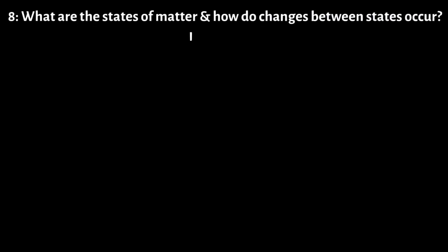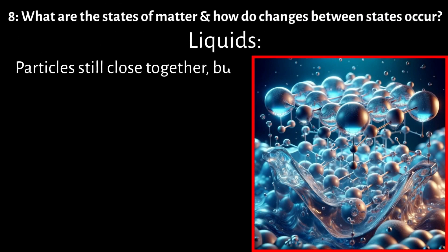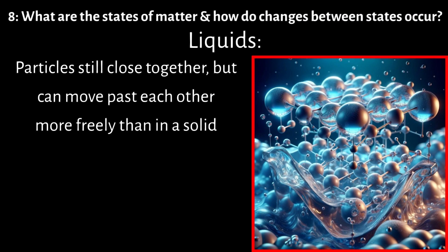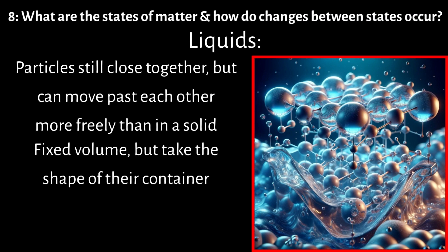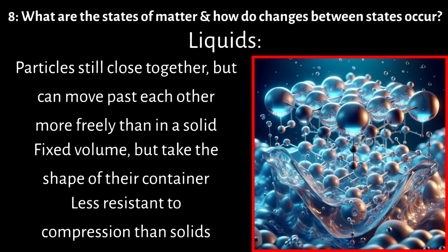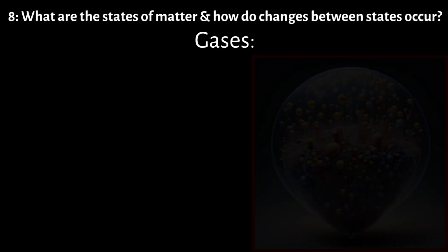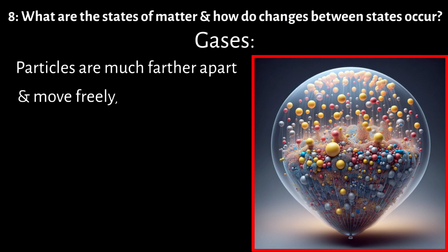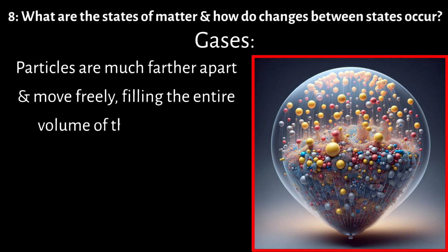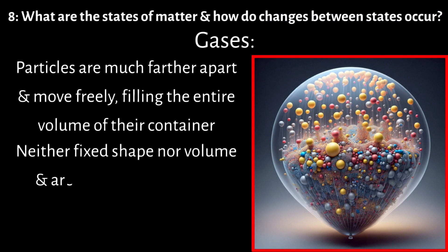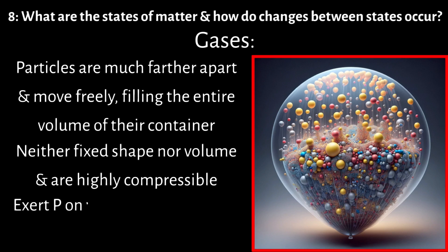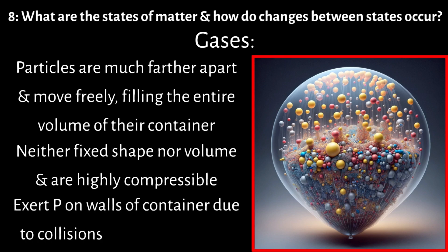In a liquid, particles are still close together but can move past each other more freely than in a solid. Liquids have a fixed volume but take the shape of their container. They flow and are less resistant to compression than solids. In a gas, particles are much farther apart and move freely, filling the entire volume of their container. Gases have neither fixed shape nor volume and are highly compressible.